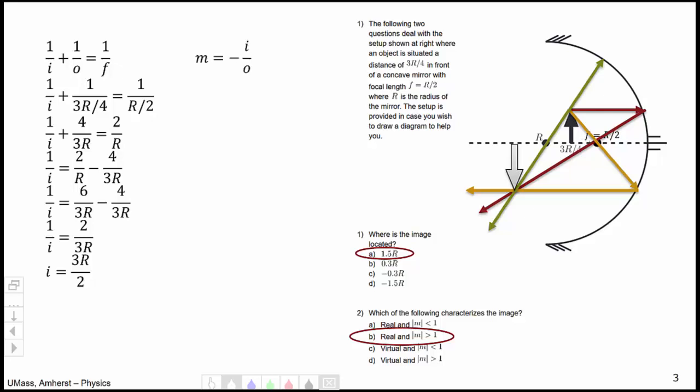For the magnification, we would begin with minus i over o, the expression connecting the magnification, image, and object distances that we found in class. Substitute in our image and object distances, the 3rs cancel, simplify our fractions within fractions, and we get a magnification of minus 2, minus indicating that the image is inverted, which we see from our picture.